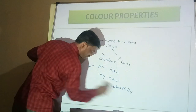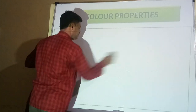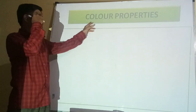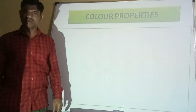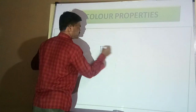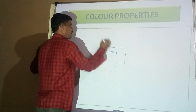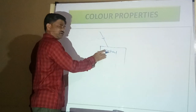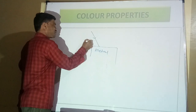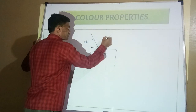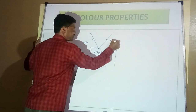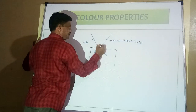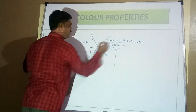Now let us shift to colour properties. What do we mean by the colour of a D block element? Suppose this is the metal under study and it is exposed to light. When incident light falls upon the metal surface, certain radiation gets absorbed while the remaining radiation gets transmitted. The colour of the transmitted light appears to our eyes, and that gives you the colour of the corresponding D block metal.